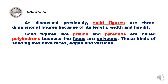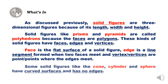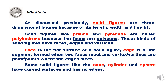These kinds of solid figures have faces, edges, and vertices. A face is the flat surface of a solid figure. An edge is a line segment formed when two faces meet. A vertex, or vertices, are the point or points where the edges meet. Some solid figures, like the cone, cylinder, and sphere, have curved surfaces and no edges.